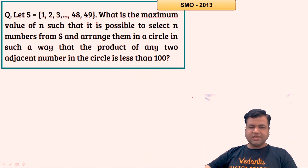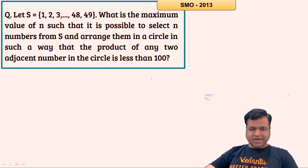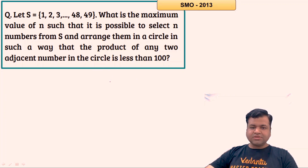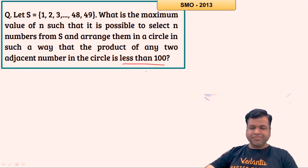Let's start the session. This is a question from 2013. The question says: let S be a set containing the first 49 natural numbers — 1, 2, 3, 4, 5 and so on till 49. What is the maximum value of n such that it is possible to select n numbers from S and arrange them in a circle in such a way that the product of any two adjacent numbers in the circle is less than 100? So the question is a little bit tricky.